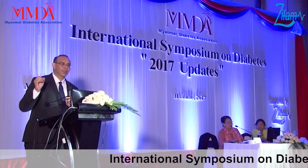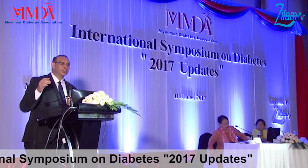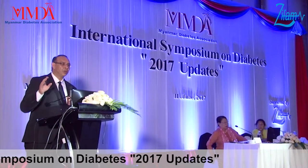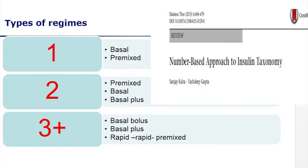We are not thinking in a patient-centered manner. The patient in general is least bothered about what kind of insulin you are giving. The patient wants to know: how many injections do I have to take every day — one, two, three, four, or five? So if you think in terms of patient-centricity, we can classify regimens as one injection per day, two injections per day, or three or more per day.